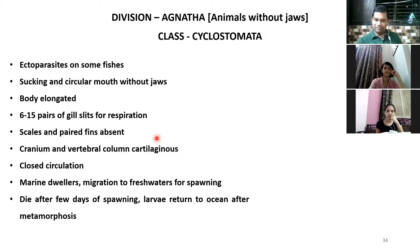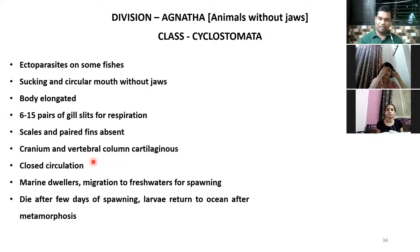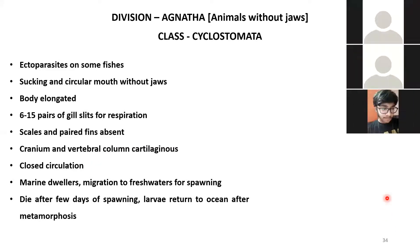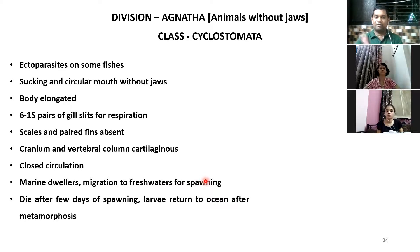In Cyclostomata, scales and paired fins are absent. They have an elongated body with six to fifteen pairs of gill slits. They have a cranium and vertebral column. They have a closed circulatory system — blood is only inside blood vessels or the heart, unlike open circulation where it fills body spaces. Closed circulation is an advanced feature, as seen in human beings too. These are marine animals and sometimes migrate to fresh waters for breeding. The adults die after breeding and the larvae return to the ocean once they become adults.